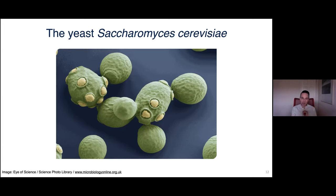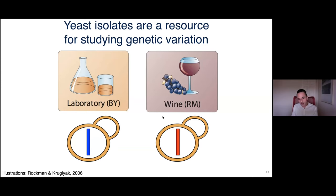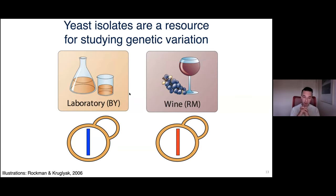None of this would help if there weren't genetic variation among yeast strains, but fortunately there is. We focus on two isolates: a common laboratory strain and a strain isolated from a vineyard in California called RM. These two strains differ at about one variant every 200 base pairs on average — five times more divergent than two typical human genomes — giving us plenty of variation for studying complex traits.